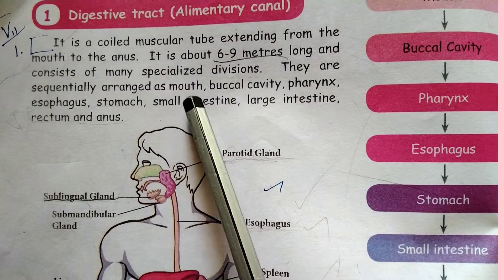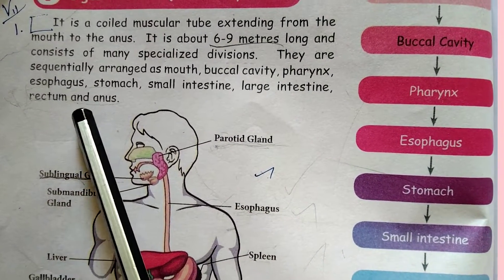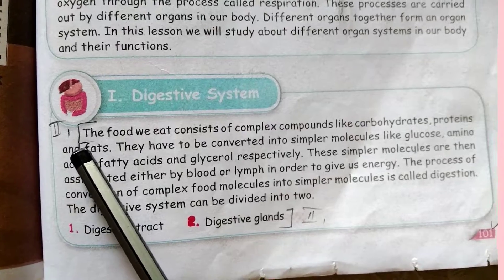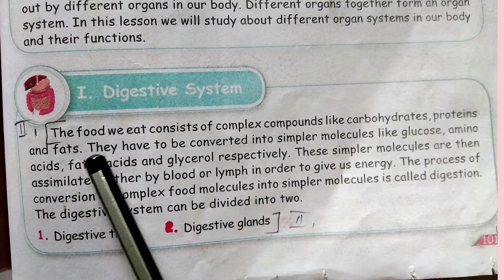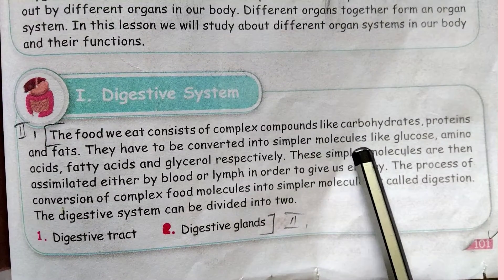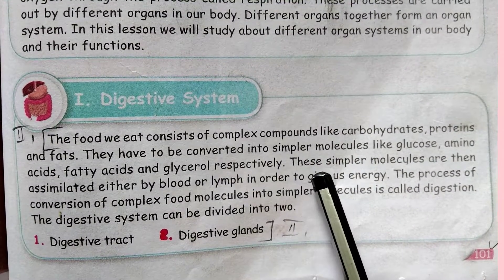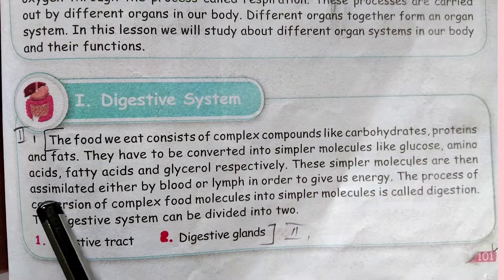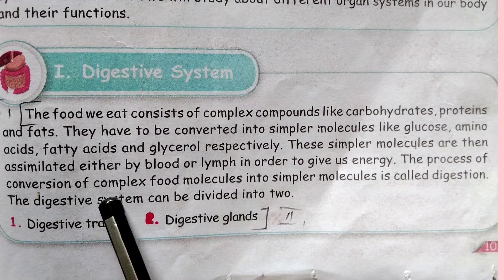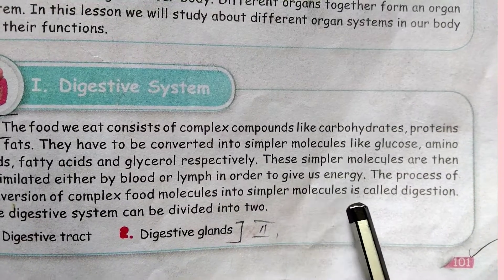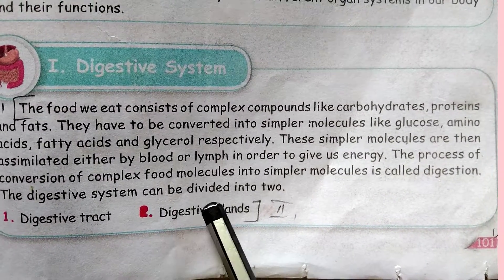The divisions are sequentially arranged as mouth, buccal cavity, pharynx, esophagus, stomach, small intestine, large intestine, rectum, and anus. The food we eat consists of complex compounds like carbohydrates, proteins, and fats. They have to be converted into simpler molecules like glucose, amino acids, fatty acids, and glycerol respectively. These simple molecules are then assimilated by blood or lymph to give us energy. The process of conversion of complex food molecules into simpler molecules is called digestion. The digestive system can be divided into two parts: digestive tract and digestive glands.